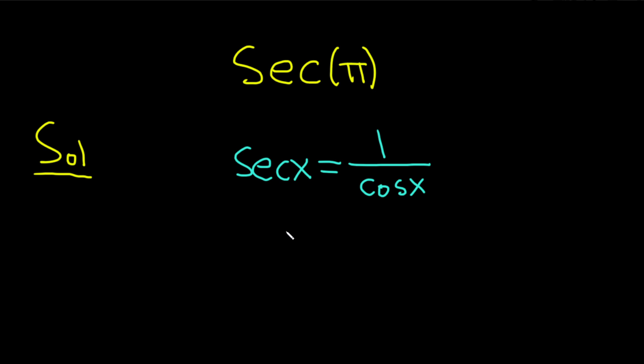And so in our problem, x is pi, so this is the secant of pi, and this is equal to 1 divided by the cosine of pi.